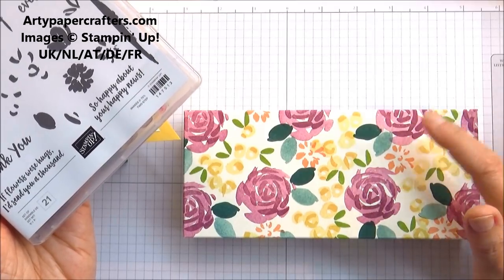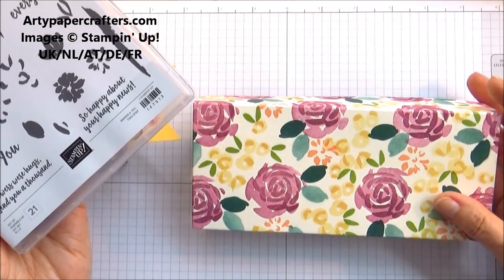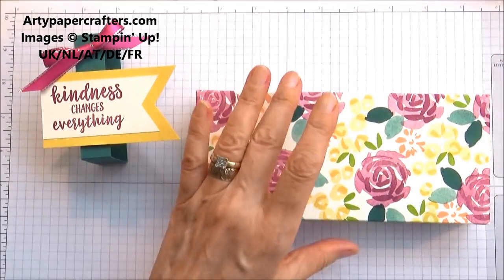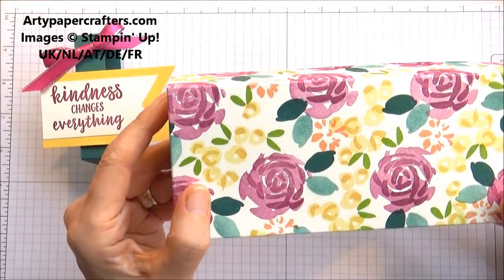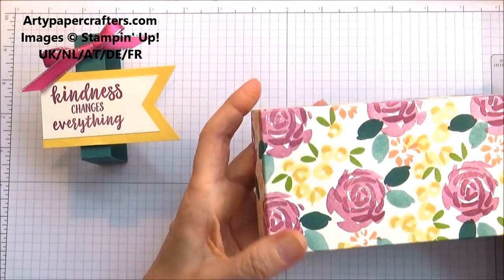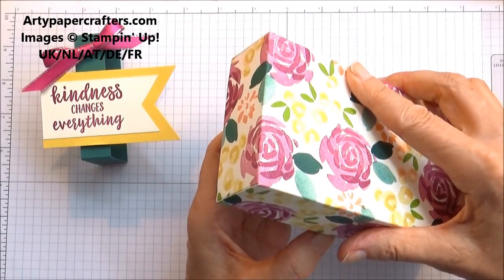Calypso Coral, Rich Razzleberry and So Saffron. I stamped my own design on a piece of Very Vanilla cardstock, but today we're going to make the box for a male and I'll explain why in a moment.